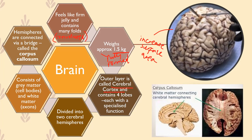The cerebral cortex actually contains four lobes. We'll go through this in more detail in chapter two, but there are four lobes of the brain and each of those lobes has a specialized or specific function. For example, one lobe is to do with vision, another with hearing, and another with movement.